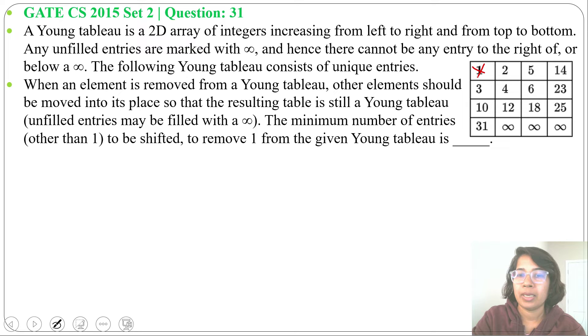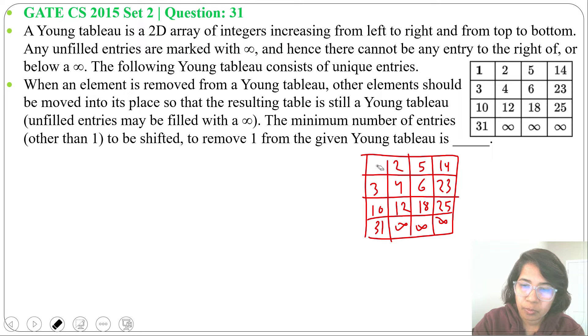In a Young tableau it should be increasing from left to right and top to bottom. Now I'll remove 1. Then after removing 1, we can shift this 2 to the left. We can write 2 here. Now 2's place is blank.